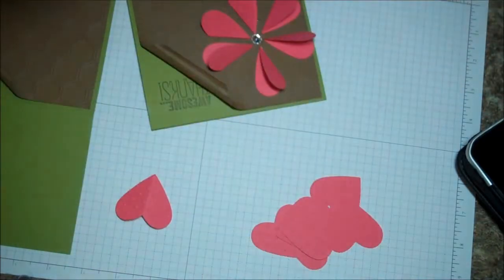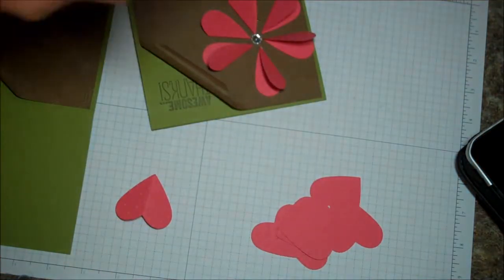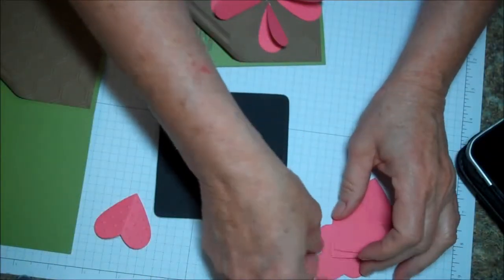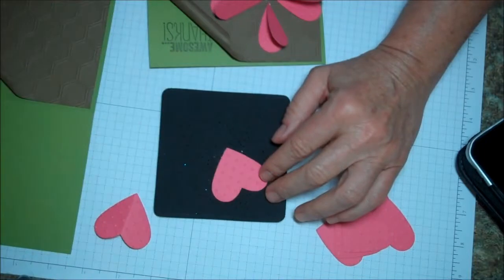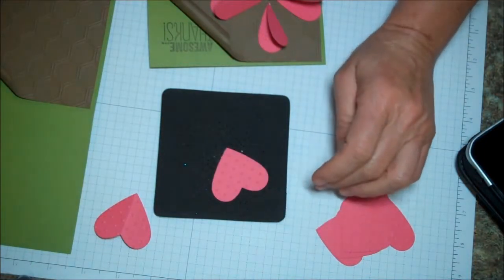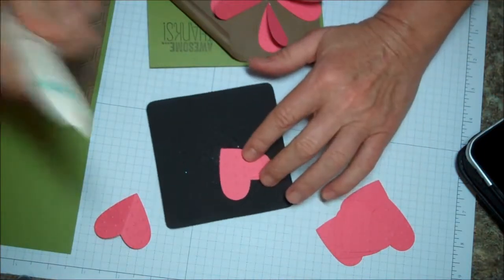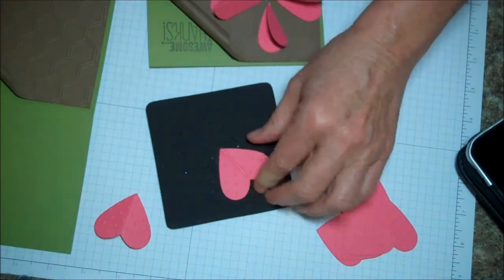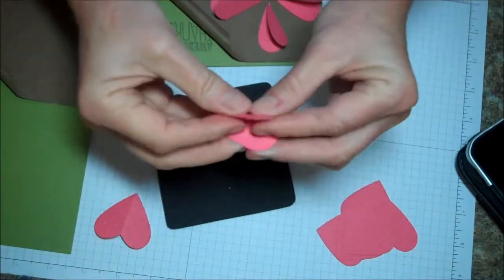And then I use one of these little foamy pads. It comes with the paper piercer or whatever. The soft pad. And then I use the bone folder. And I'm just going to fold these hearts in half.